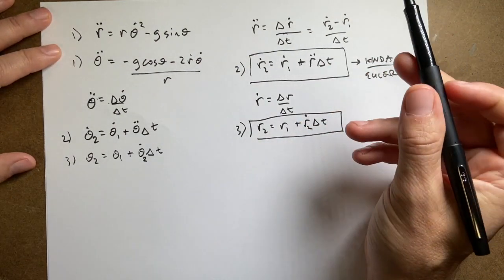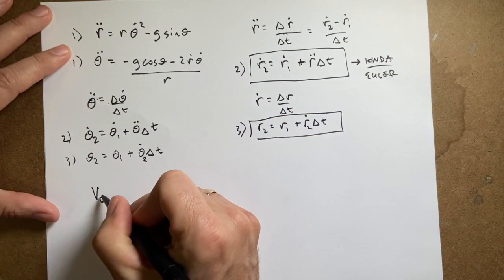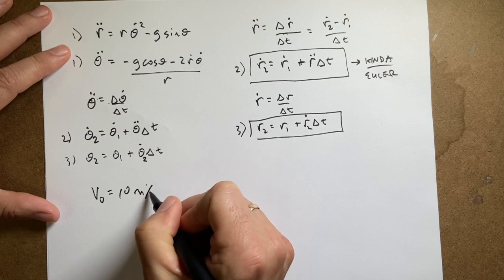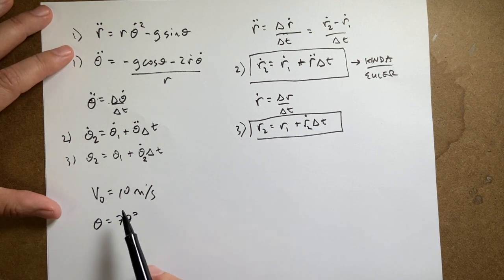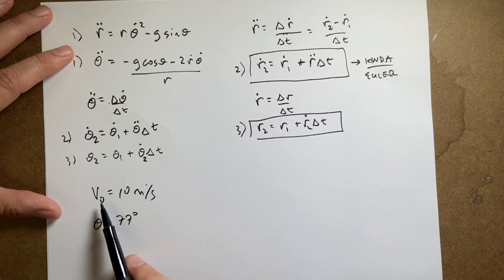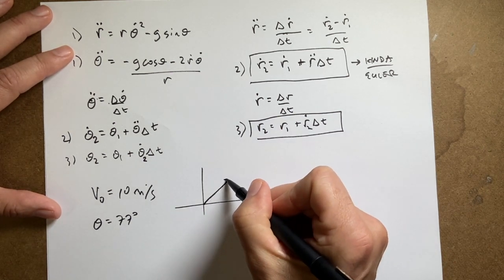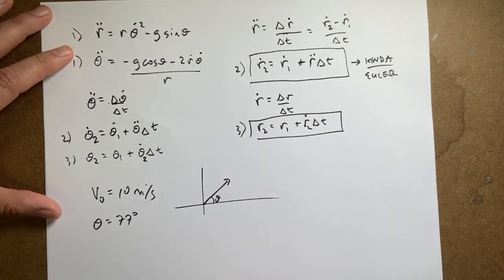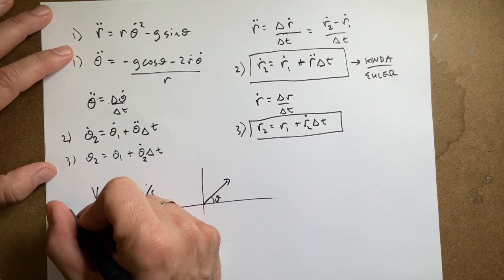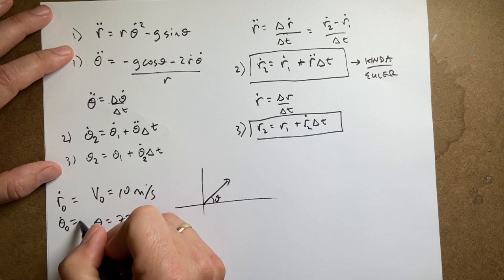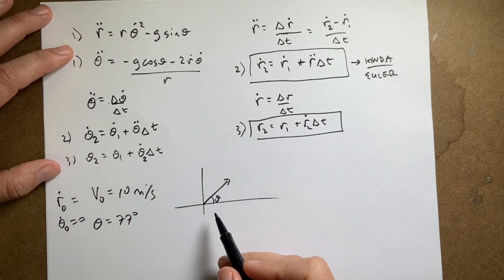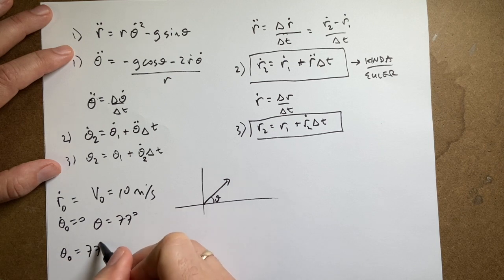Let's look right here for my initial conditions. Let's say v0 equals 10 meters per second and theta equals 77 degrees. I'm just picking something. Now I need to get r dot initial and theta dot initial. Here's my velocity. If I launch it at that angle, then this is r dot initial because it's going in that direction. It's not turning. Theta dot initial is zero.